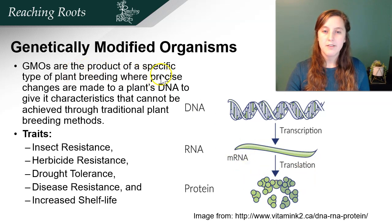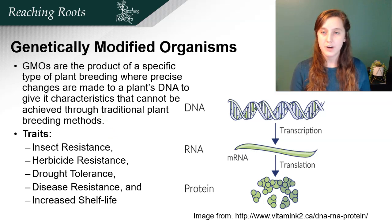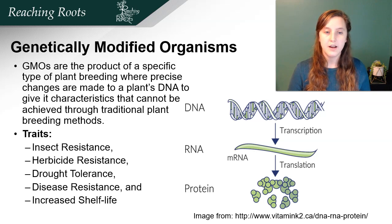GMOs are the products of a specific type of plant breeding where precise changes are made to a plant's DNA to give it characteristics that cannot be achieved through traditional plant breeding methods — meaning the gene might not be in the gene pool or it's very difficult to get that trait into the plant you want. Traits that can be added through GMO technology include insect resistance, herbicide resistance, drought tolerance, disease resistance, and increased shelf life.